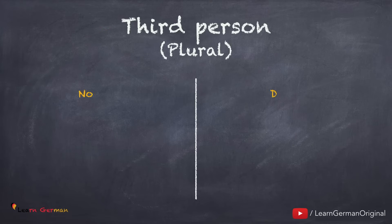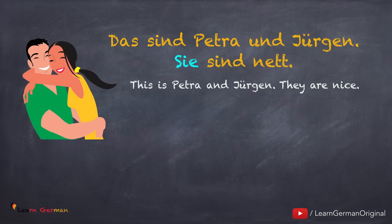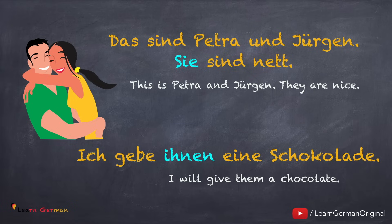Coming to the last one — third person plural: in Nominativ it is sie, and in Dativ it's ihnen. In this case, the capital I is replaced by a small i. Let's see how to use them: 'Das sind Petra und Jürgen. Sie sind nett. Ich gebe ihnen eine Schokolade.' In this sentence, ich is the Nominativ subject, eine Schokolade is the Akkusativ object, and ihnen is the Dativ object. The Dativ Personalpronomen for sie (plural) is ihnen.